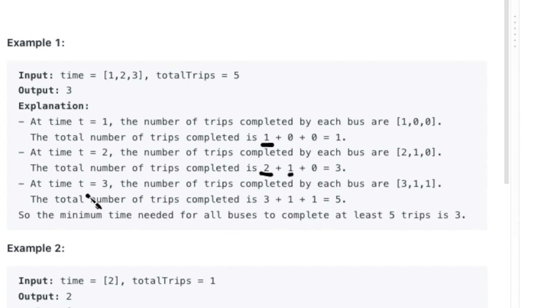At three hours, now you can make five trips due to bus one making three trips, bus two making one trip, and bus three also making one trip. And since the total trips is five, the minimum answer would be three hours.